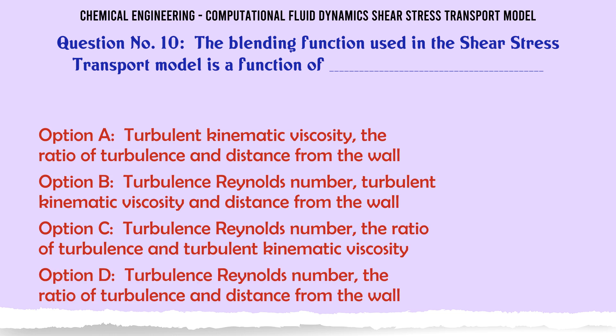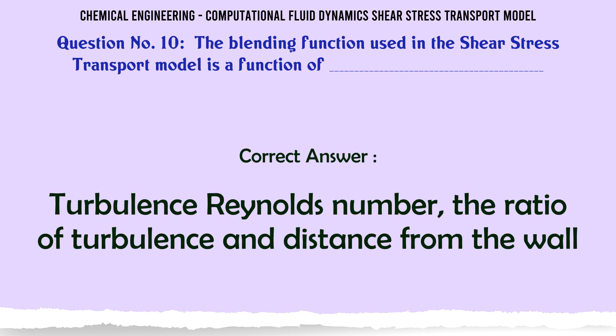The blending function used in the shear stress transport model is a function of: A) Turbulent kinematic viscosity, the ratio of turbulence, and distance from the wall — B) Turbulence Reynolds number, turbulent kinematic viscosity, and distance from the wall — C) Turbulence Reynolds number, the ratio of turbulence, and turbulent kinematic viscosity — D) Turbulence Reynolds number, the ratio of turbulence, and distance from the wall. The correct answer is D: turbulence Reynolds number, the ratio of turbulence, and distance from the wall.